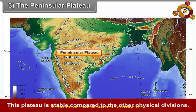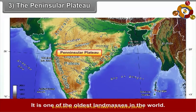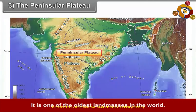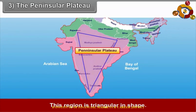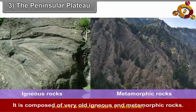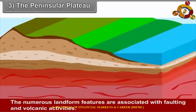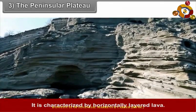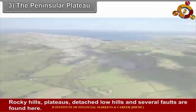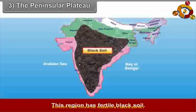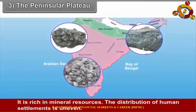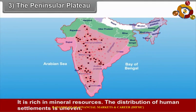The Peninsular Plateau: This plateau is stable compared to the other physical divisions and is one of the oldest landmasses in the world. It is the largest physical division of India and is triangular in shape. It is composed of very old igneous and metamorphic rocks. Numerous landform features are associated with faulting and volcanic activities, characterized by horizontally layered lava. Rocky hills, plateaus, detached low hills, and several falls are found here. This region has fertile black soil and is rich in mineral resources, though the distribution of human settlements is uneven.